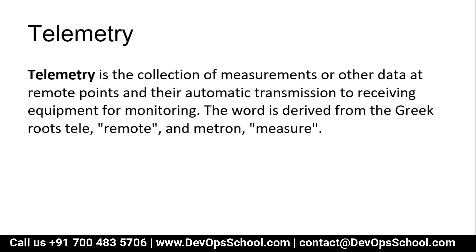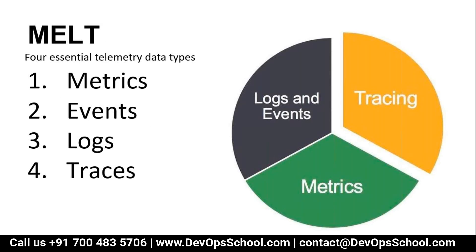We typically call these data types telemetry — health checks, metrics, logs, and tracing. Telemetry is a very popular keyword in the world of observability. Telemetry is a collection of measurements or other data at remote points and their automated transmission to receiving equipment for monitoring. The word is derived from the Greek roots: 'tele' means remote, and 'metron' means measure. The components of telemetry are metrics, events, logs, and traces — in short, we call it MELT. If you monitor MELT, you have set up an observable system rather than just monitoring.